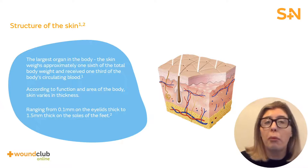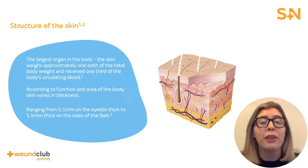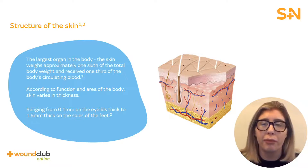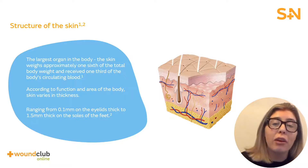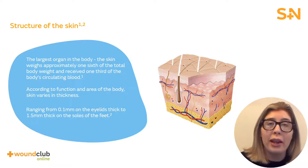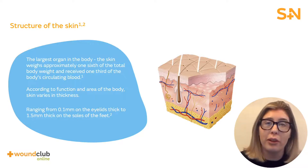The skin is a complex organ with a complex structure, and that's to allow for the array of functions it carries out. To simplify it, it's comprised of two main layers: the epidermis and the dermis. We also have the subcutaneous layer, which is found below the dermis.